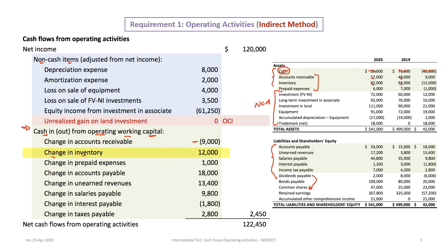Consider a simple example: if we purchase inventory and pay cash, inventory goes up and cash goes down. If instead we return inventory to a supplier for cash, inventory goes down and cash goes up by $12,000 because they refunded us. Prepaid expenses went from $7,000 to $6,000 — a $1,000 decrease — so we add that $1,000 back. That's it for the current assets.